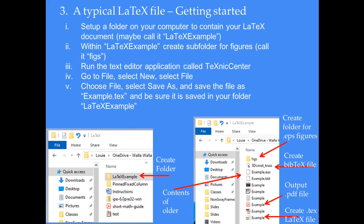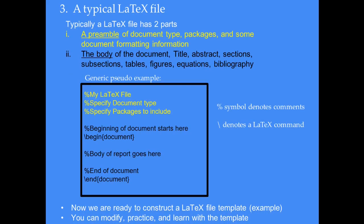Not only will I have the presentation available to you, but I'll also have it recorded as a video. Now let's look at a generic LaTeX file. This one is going to be very simple and not even really complete, but it will show you what it looks like and then we'll get into a more realistic example. Basically, a LaTeX file only has two parts: it has a preamble and it has a body.